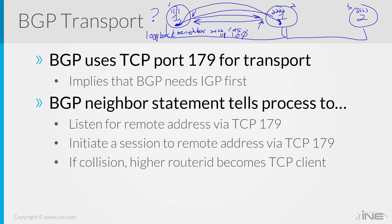Because the BGP neighbor statement tells the process to listen for the remote address via TCP port 179, that is the server aspect of it. The well-known port 179 is always going to be the server. The client initiates with some other random port number. It will initiate a session to the remote address via TCP port 179. If there's a collision — if both try to send to that address — the higher router ID becomes the TCP client and the lower router ID becomes the server.